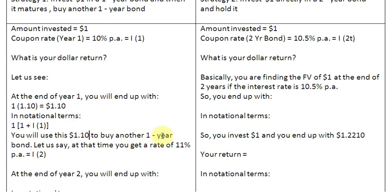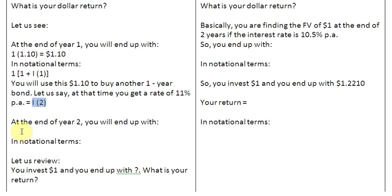With that one dollar and 10 cents, we go ahead and buy another one-year bond. This time we get a coupon rate of 11 percent on the new bond, denoted as i2. At the start of year two we invested $1.10, so we multiply 1.10 by 1.11 and close the bracket. The result is 1.221, so one dollar and 22.1 cents is the amount of money we end up with at the end of the second year.